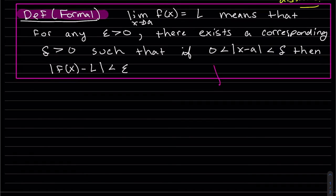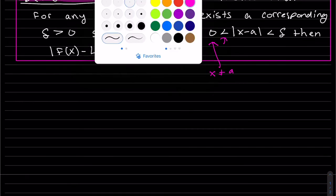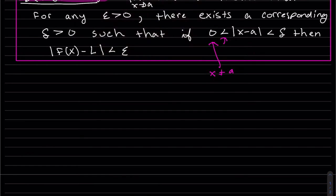And just a note here, this being strictly greater than zero just means that x shouldn't equal to a. So it just means that x is near a but not equal to a. So there's going to be two parts to proving epsilon proofs, to proving limits.